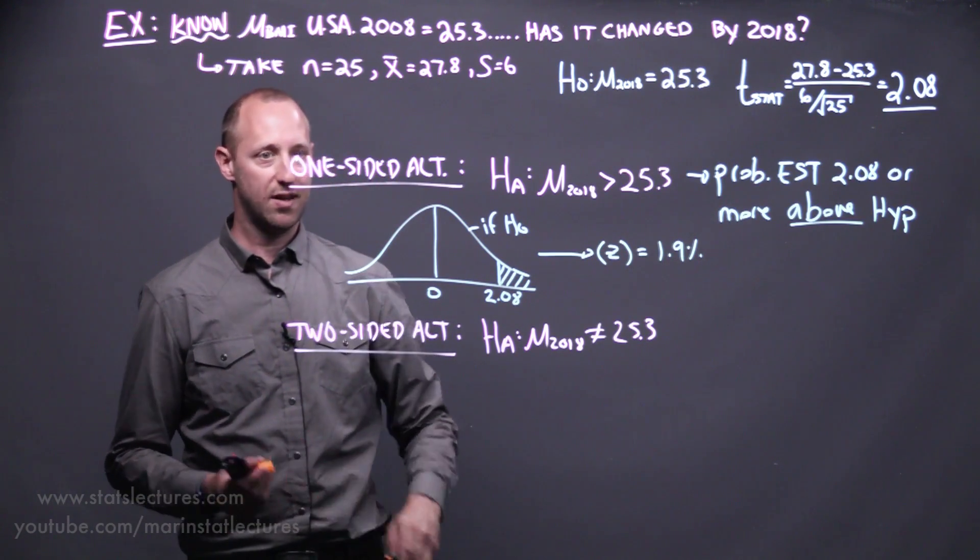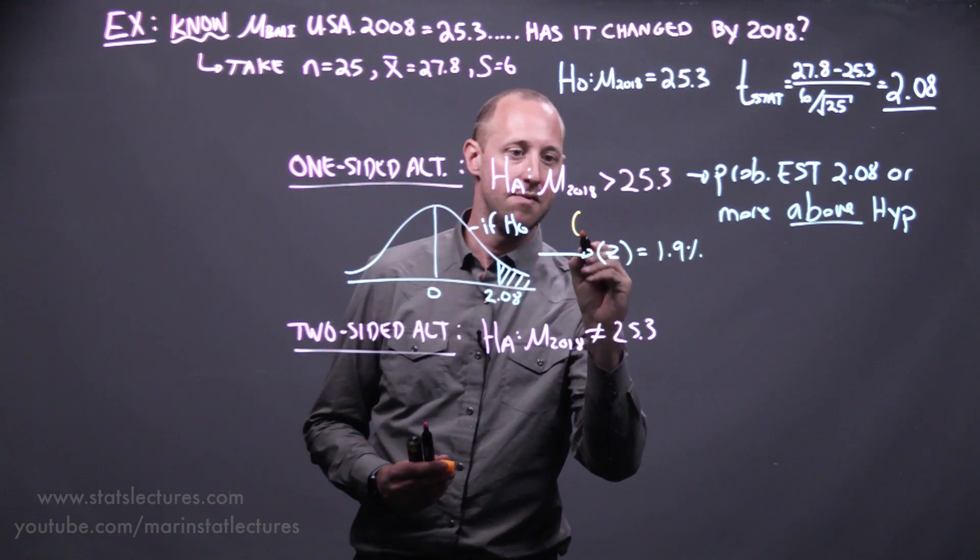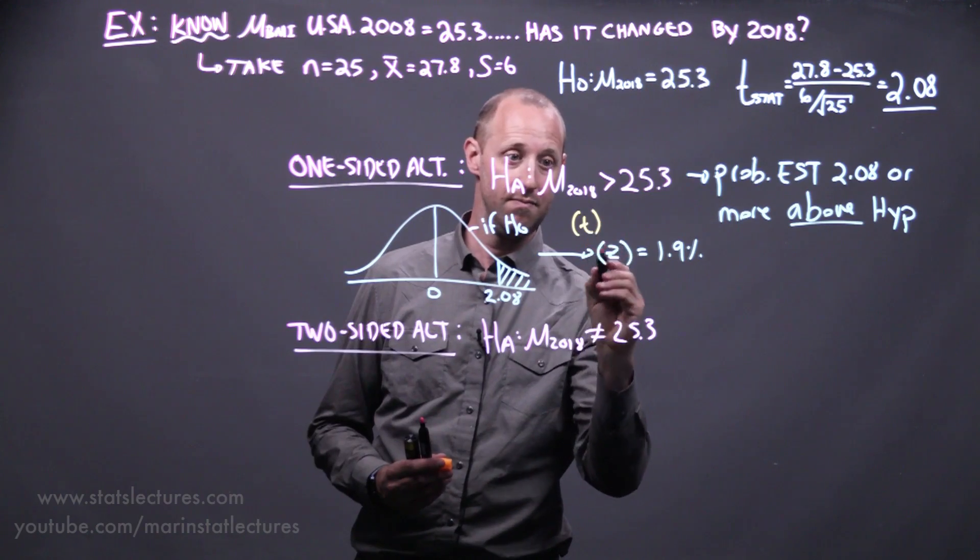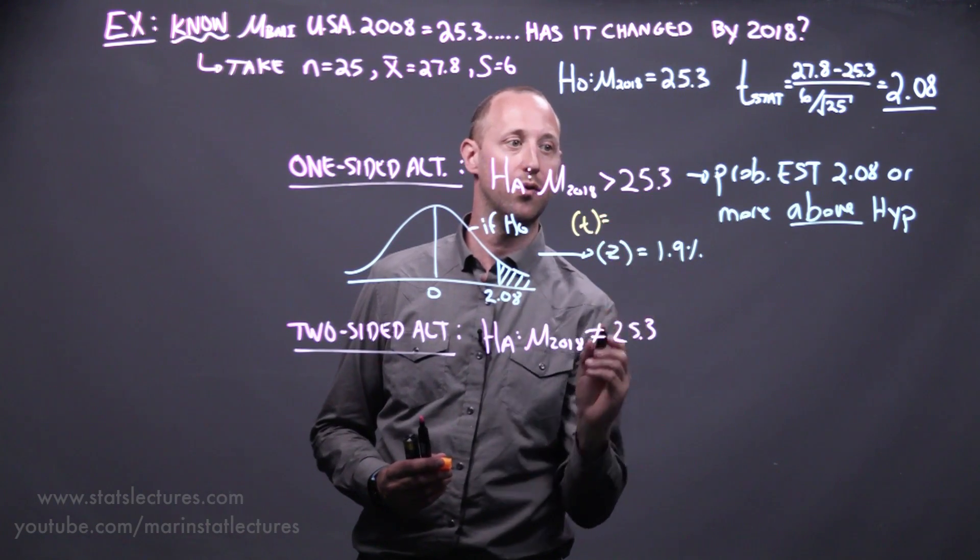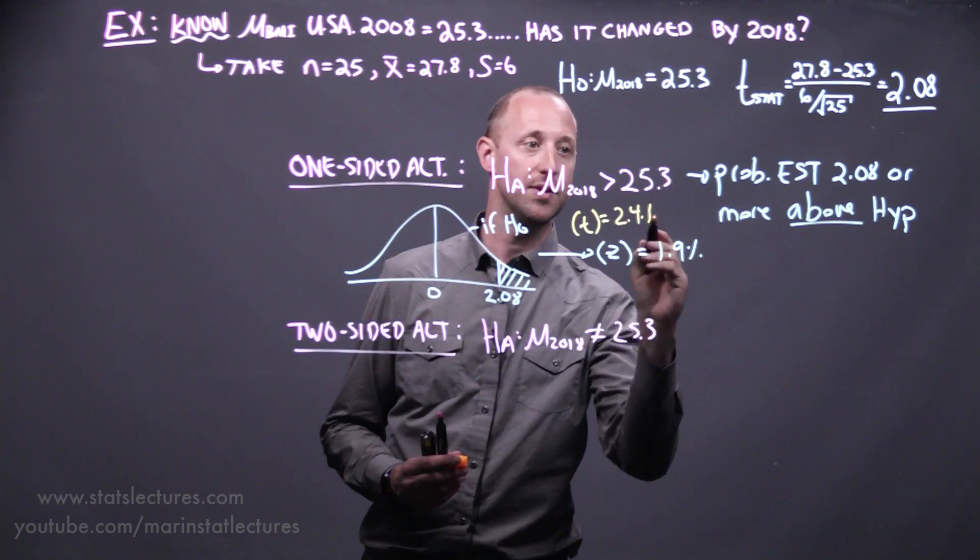And we saw, just for the sake of completeness or correctness, if you use the t-distribution, which is technically the right way to go, the p-value is going to come out to be 2.4%.